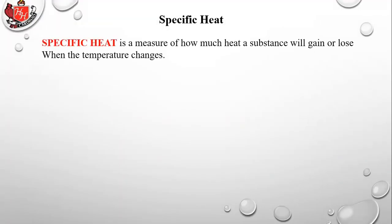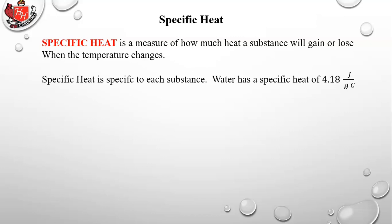Specific heat is a measure of how much heat a substance will gain or lose when temperature changes, and it is specific to a substance. We saw this number when we did heating curves. Water has a specific heat of 4.18 joules per gram per degree centigrade. That means to take one gram of water and raise it by one degree centigrade — or kelvin, since the degree is the same on both scales — you would need 4.18 joules of energy.